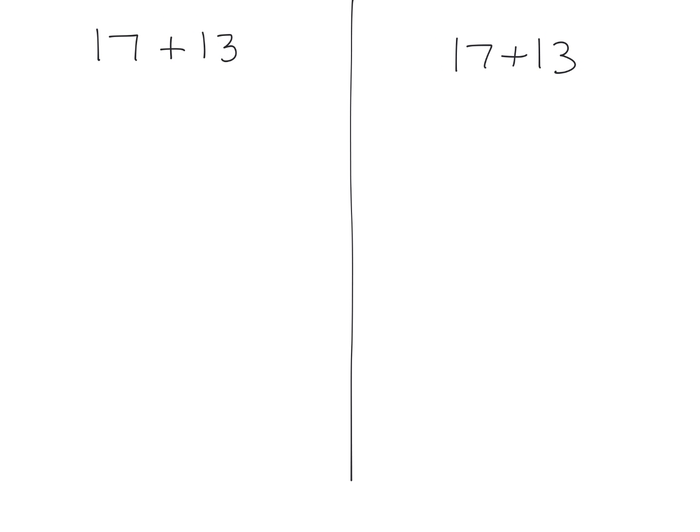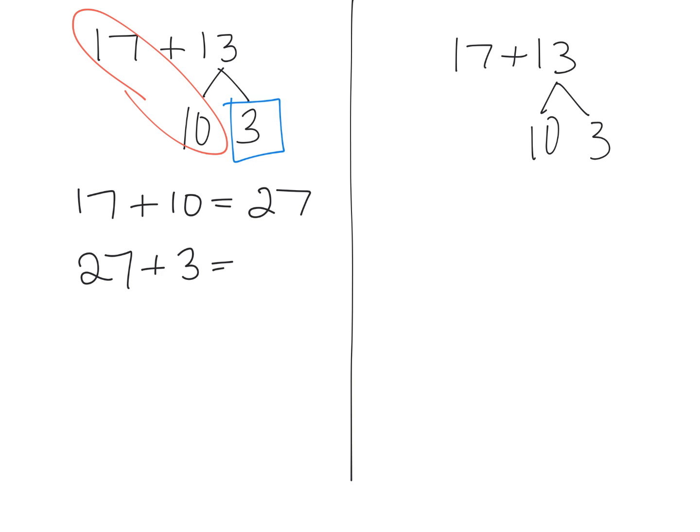So as a quick example, we're going to start with 17 plus 13, and we're going to decompose it. We're going to solve it twice. And in both cases, we're going to decompose that 13 into 10 and 3 both times. Now, the difference is here, let's do what we've historically been doing, which is add the tens first. So we're going to add these tens. And so we're going to get 17 plus 10, that gives us 27. And then we're going to take that 27, and we're going to add in the final 3, because we haven't added that in yet. And that's going to give us 30.